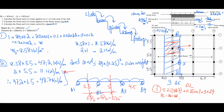The live load is simply 5.25 × 11 kilonewton per meter — the live load coming from the beam — which gives 57.8 kilonewton as a point load at column B2.